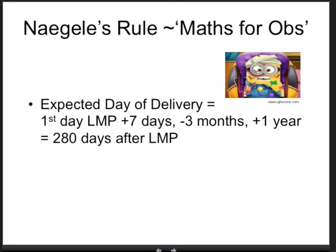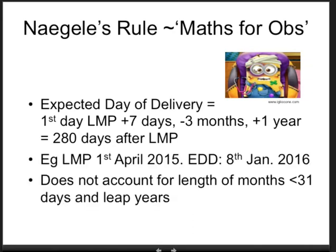What is Naegele's rule? It's easy for obstetricians: calculate the expected date of delivery by starting with the first day of the last menstrual period, then adding seven days, subtracting three months, and adding one year — or simply: add seven days and nine months. This is based on a duration of 280 days after the LMP. For example, if the LMP was the 1st of April 2015, add seven days gives the 8th of April, subtract three months gives January, so the due date is the 8th of January 2016. Note that Naegele's rule does not account for months shorter than 31 days or leap years, but it does a good job in daily practice.